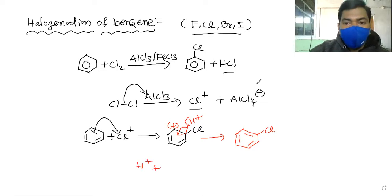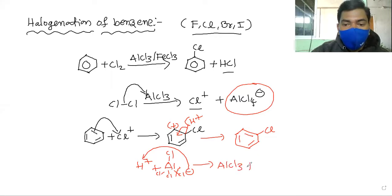AlCl4- attacks and releases. The negative charge donates the electron pair to form a double bond. The C-H bond breaks, the electron pair regenerates AlCl3 plus HCl is formed.